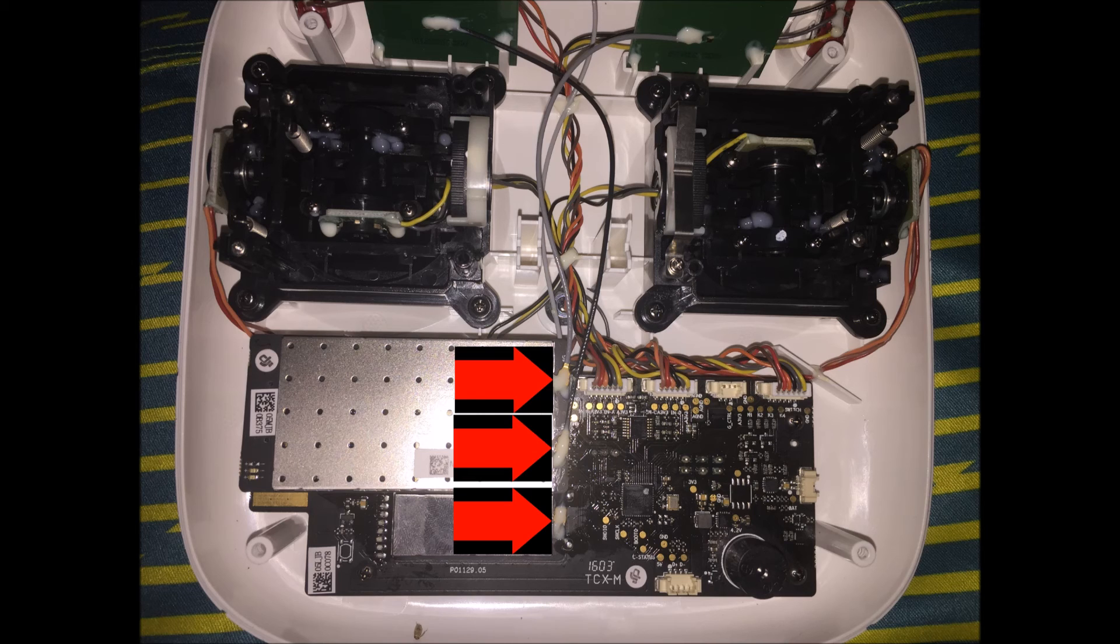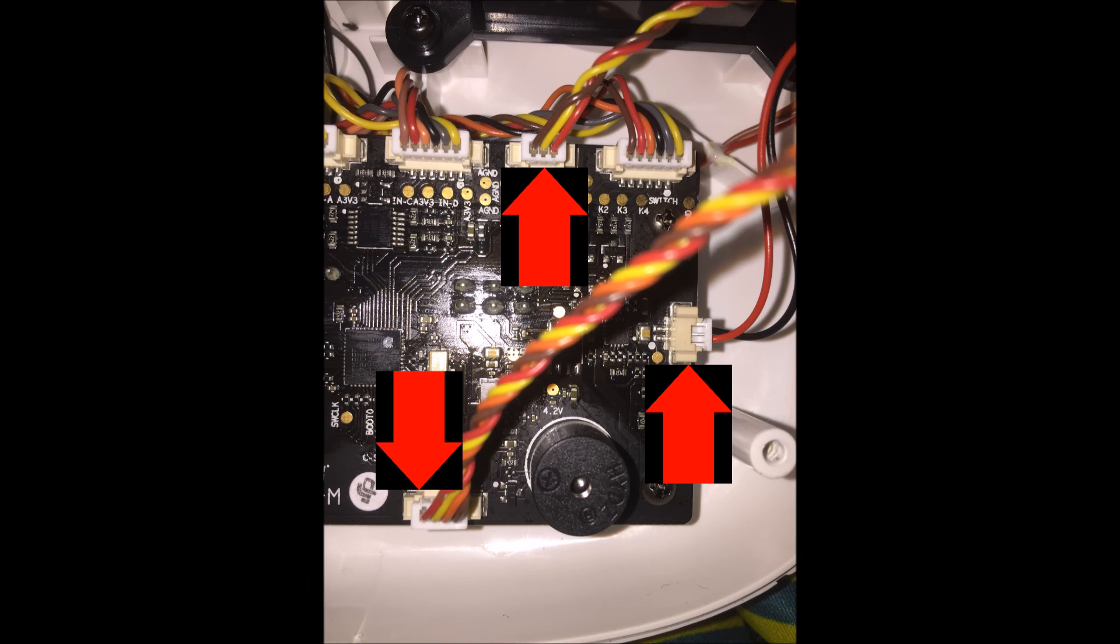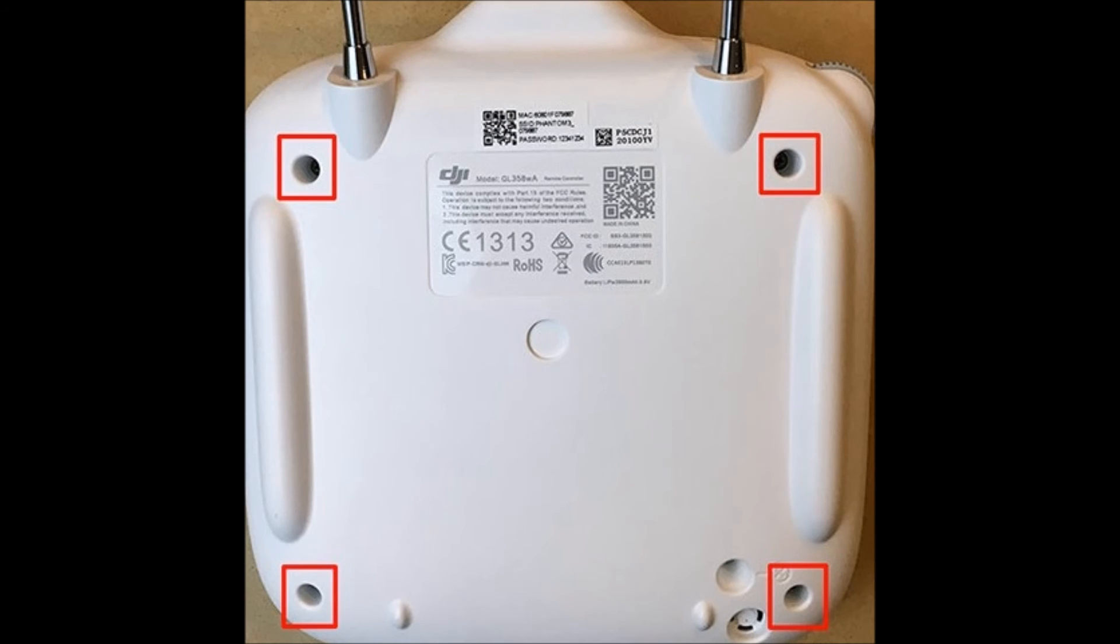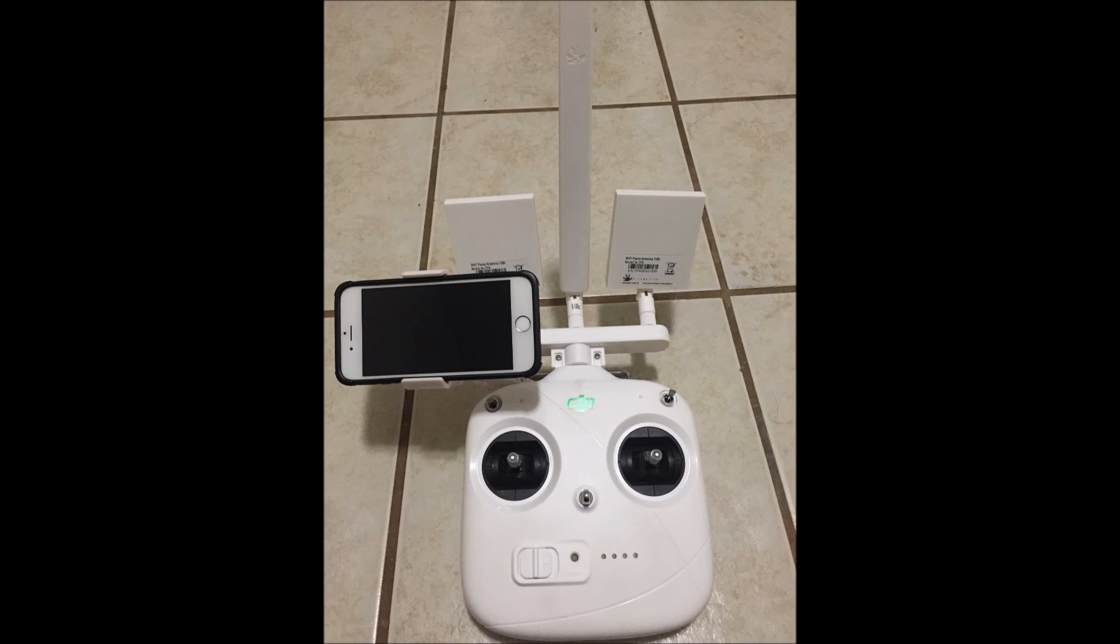So you're going to want to reinstall the wiring harnesses next that you took out, and make sure that they're again in the correct orientation. Then pop the two halves of the remote back together, reinstall the four screws onto the back of the controller, and the last step is to screw in your new antennas into the mounting bracket.